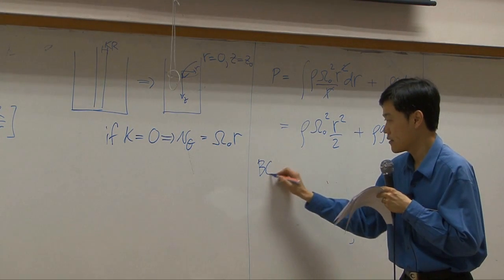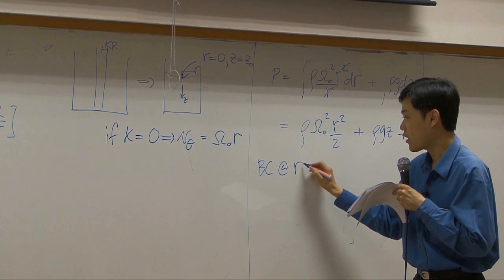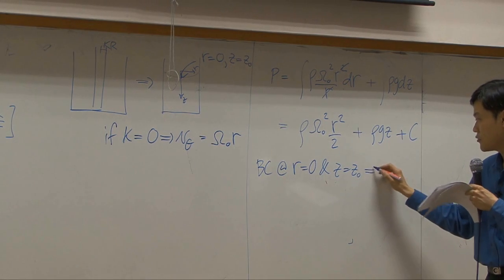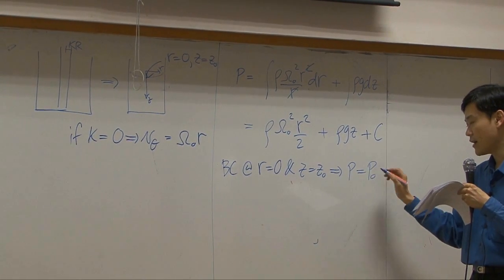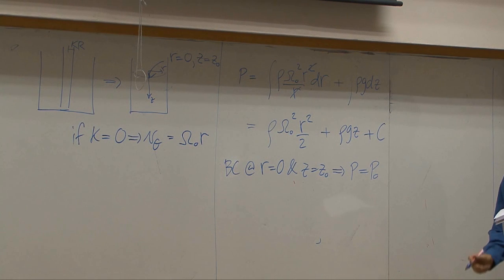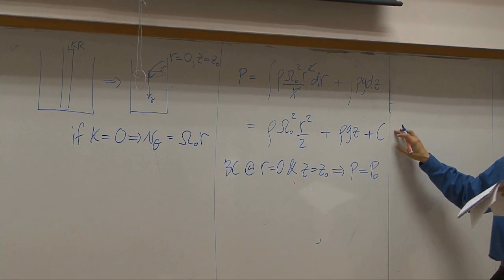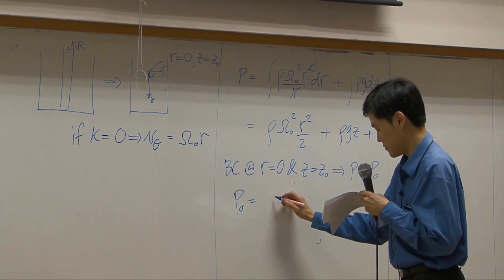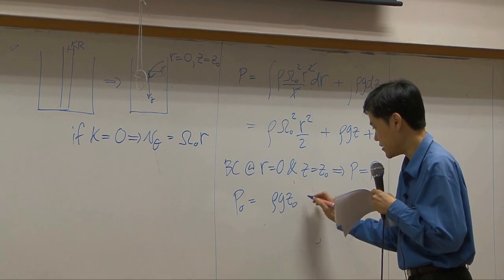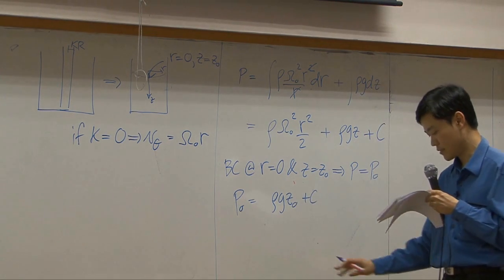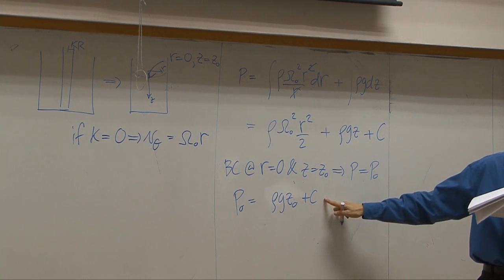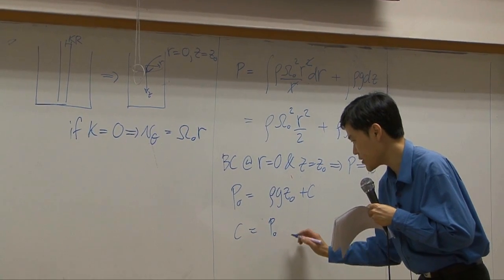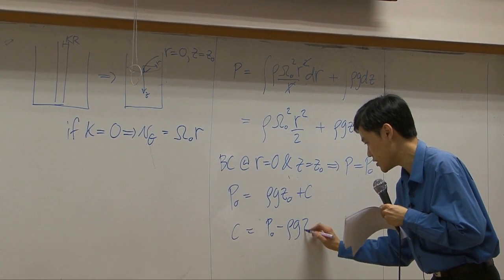We know that at r equal to zero and z equal to z₀, you get pressure of the liquid to be atmospheric pressure. Applying this to the equation, you get p₀ equal to ρg·z₀ plus constant. Then you can solve for the constant: the constant equals p₀ minus ρg·z₀.